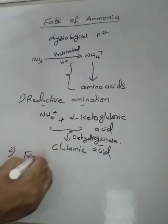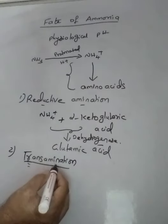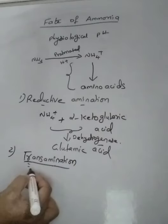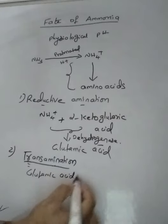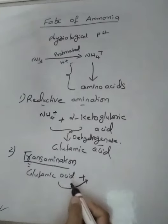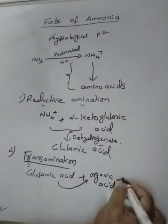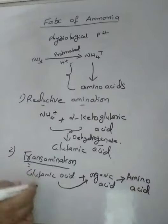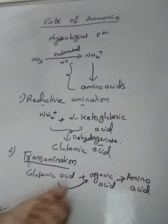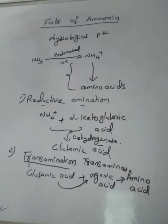The second step is transamination. In transamination, a transfer takes place — specifically, the amino group is transferred. Glutamic acid, the first amino acid, transfers its amino group to the next organic acid to synthesize another amino acid. Glutamic acid is the donor, and the organic acid is the acceptor. The final amino acid is synthesized in the presence of transaminase enzyme, completing the synthesis of amino acids.